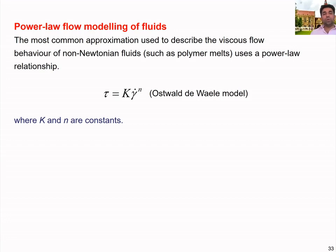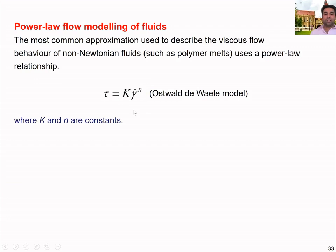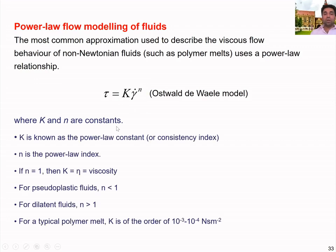Since polymers can be non-Newtonian, we need another model to describe that behaviour. The common approximation used to describe the viscous flow behaviour of non-Newtonian fluids is the power law relationship, also called the power law model. The power law model expresses shear stress similarly to Newton's law of viscosity. Here k and n are constants; k is called the consistency index or power law constant.